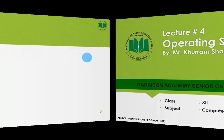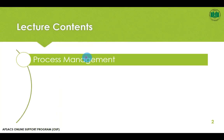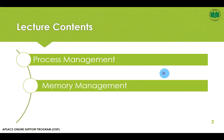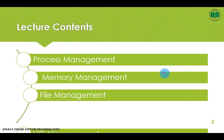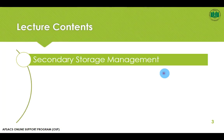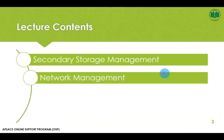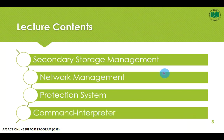In this chapter, we will discuss several functions of the operating system — for example, process management, memory management, file management, input-output management, secondary storage management, network management, protection system, and command interpreter.